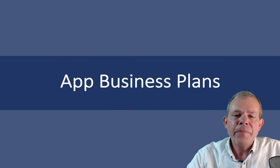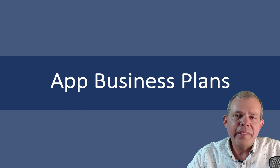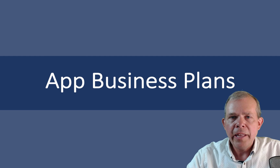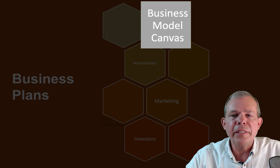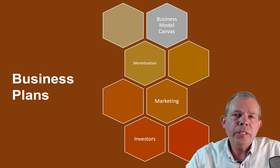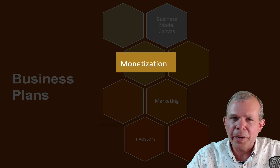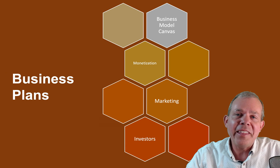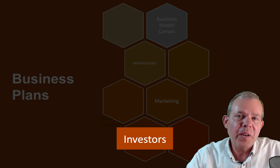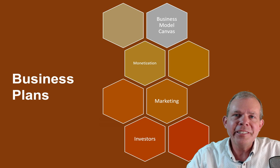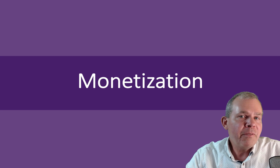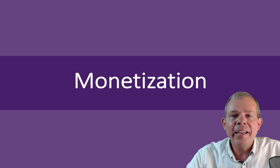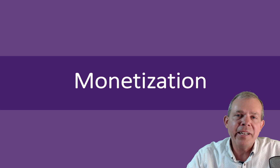Let's take a look at our app business plans. We're doing four videos right now covering problems we're going to face. The previous video was about the business plan, called the business model canvas. In this video we're going to talk about monetization — trying to figure out how you can make money by people paying for your app or through advertising. There are a multitude of ways we can do this.